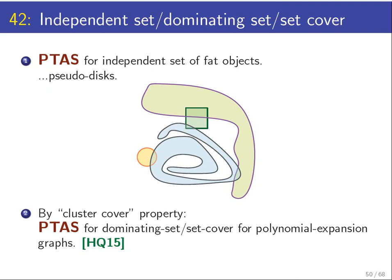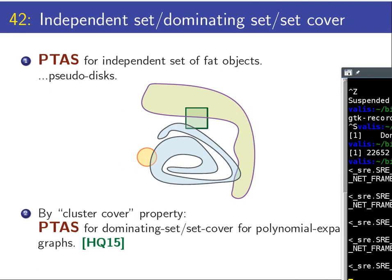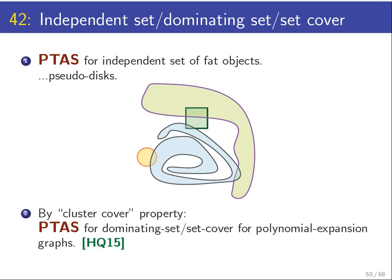I should mention however that for the dominating set, unlike the independent set case, we require that the input is low density or polynomial expansion, while in the independent case we only require it of the output to be small.